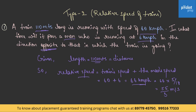They have asked us for the time. Using time = distance / speed, time = 110 ÷ (55/3) = 110 × 3/55 = 6 seconds. We are done with question 1.